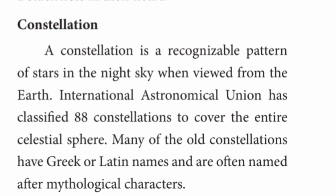In the Universe and Space lesson, we will see the types of galaxies. There is a pattern of stars in the night sky when viewed from the Earth. The International Astronomical Union has classified 88 constellations to cover the entire celestial sphere. The entire celestial sphere is located in the area of 88 constellations.